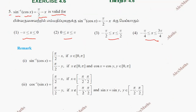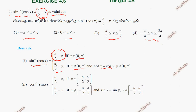So we have a remark here: sin inverse of cos x equals pi by 2 minus x, if x belongs to the valid range — those are the conditions. We have the question: pi by 2 minus x is valid for the fact that sin inverse of cos x equal to pi by 2 minus x is valid for a certain range.